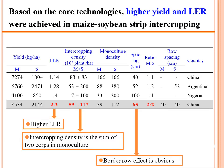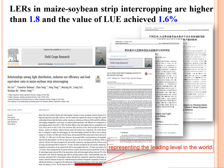Based on the core technologies, high yield and high LER were achieved in the maize-soybean strip intercropping system. In some places using relay intercropping, the LER goes up to 2.2. The LER in maize-soybean intercropping is higher than 1.8 and the land use efficiency value achieved 1.6%.